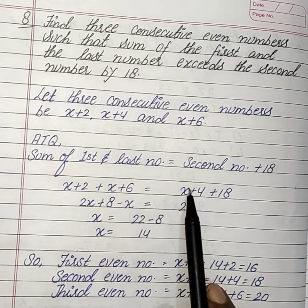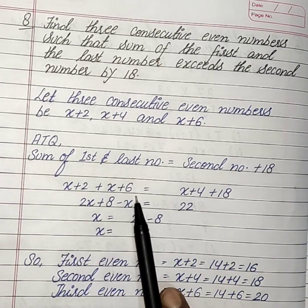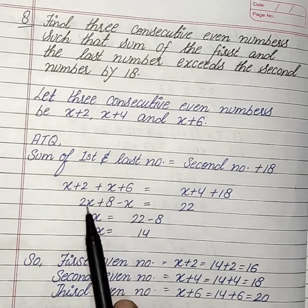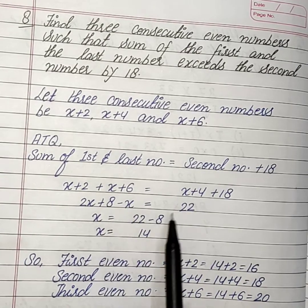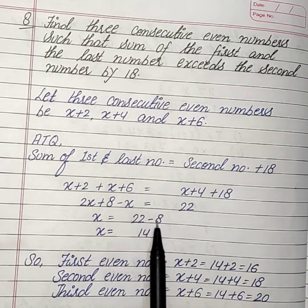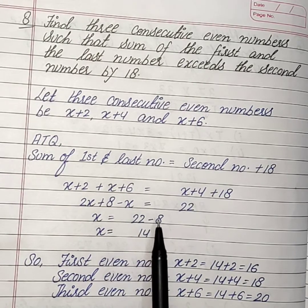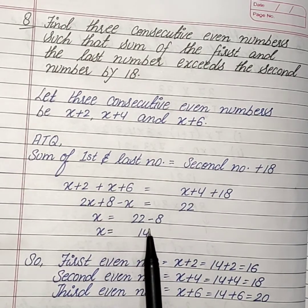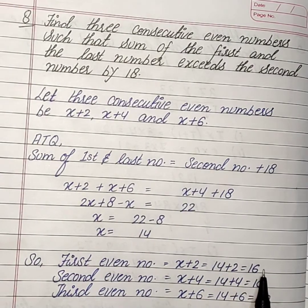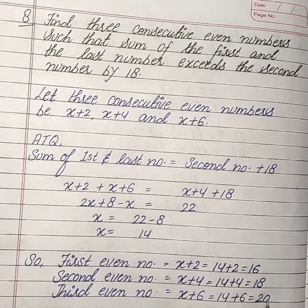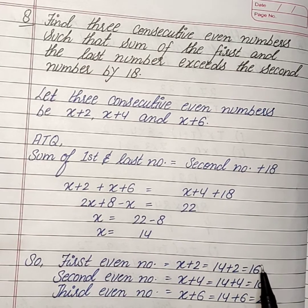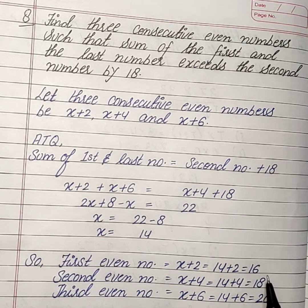On transposing X to the left side we get minus X. X plus X gives 2X, and 2 plus 6 gives 8. So 2X minus X equals X and 8 transposed to the right gives minus 8, giving X equal to 14. So the first even number is 14+2 = 16, the second is 14+4 = 18, and the third is 14+6 = 20. The sum of 16 and 20 is 36, which is 18 more than the second number 18.